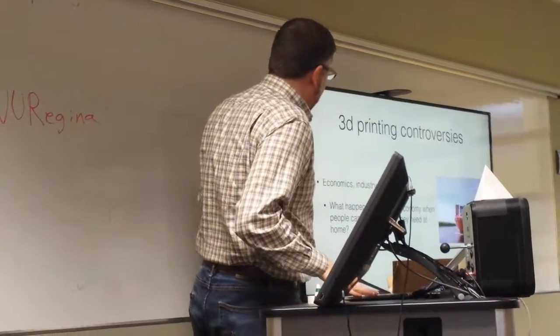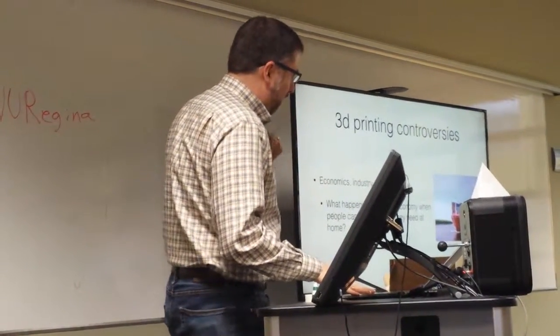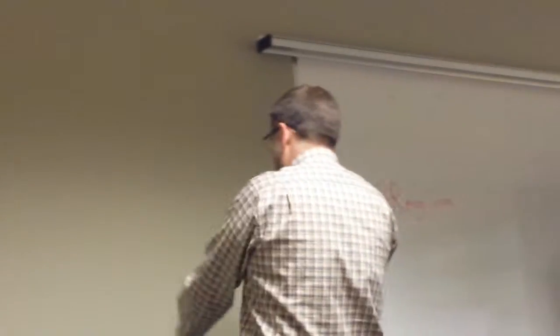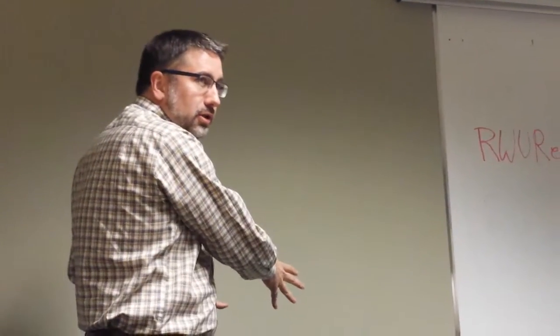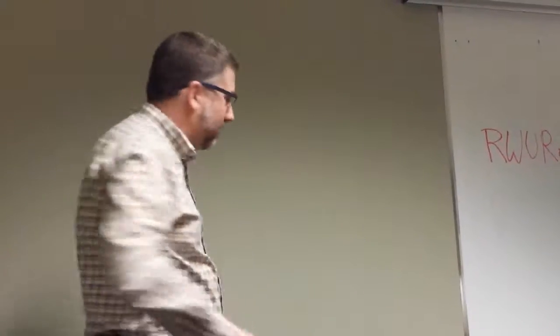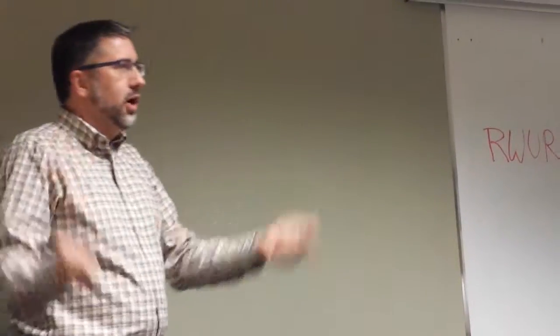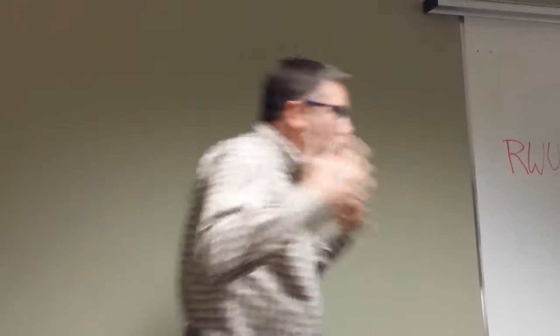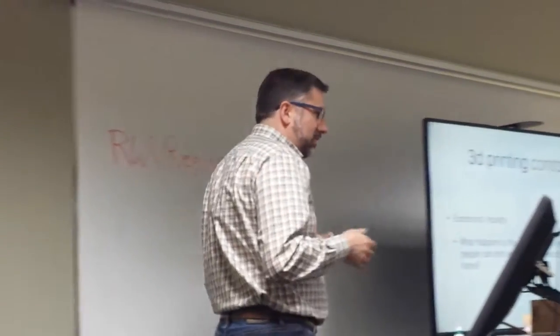And we already talked about economics and industry and how if you had a machine in your house, this is the sort of future people imagine with 3D printing. You've got your kitchen and you've got your dishwasher and then beside your dishwasher you've got your manufacturing machine. And you download a plan from the internet and you put it in there and then out comes a new set of silverware or a new pair of shoes or whatever you need. And that changes everything about the way that the economy is set up right now.